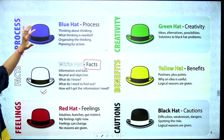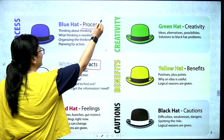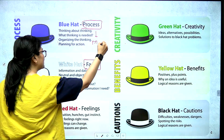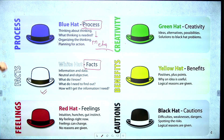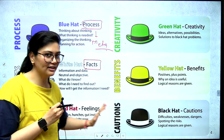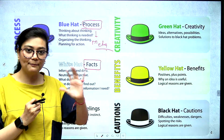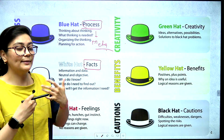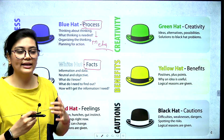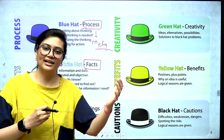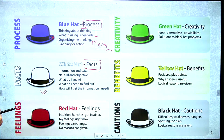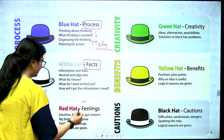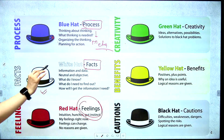Then we come to the blue hat. The blue hat shows you the process — this is the hat that also shows metacognition. Thinking about thinking is what the blue hat represents. How do you organize your thinking? How do you think about anything? Because we have analyzed it quite well — we have seen the pros, cons, facts, and solutions. Now we start the process of how can we improve it.